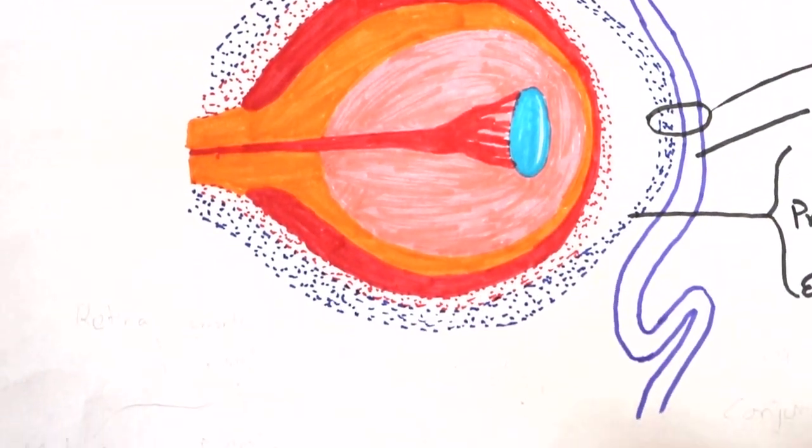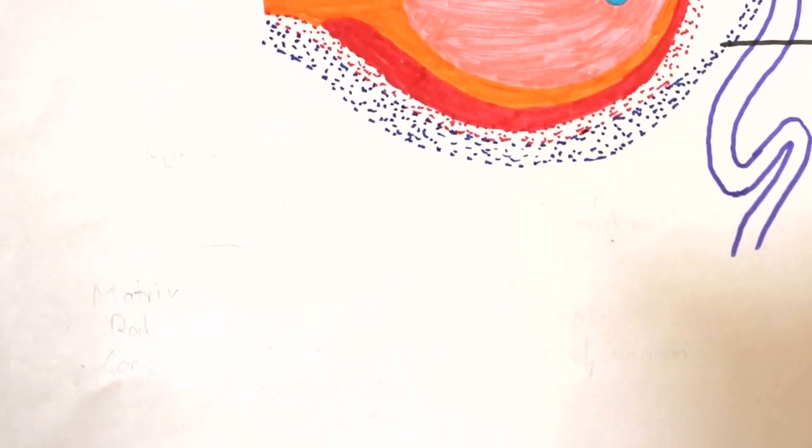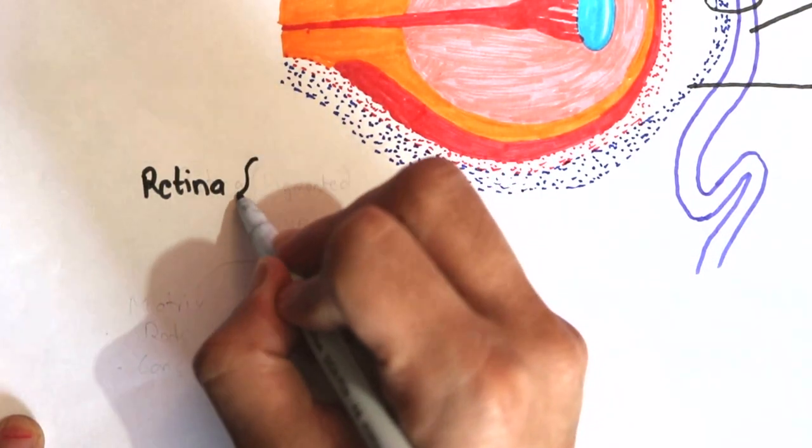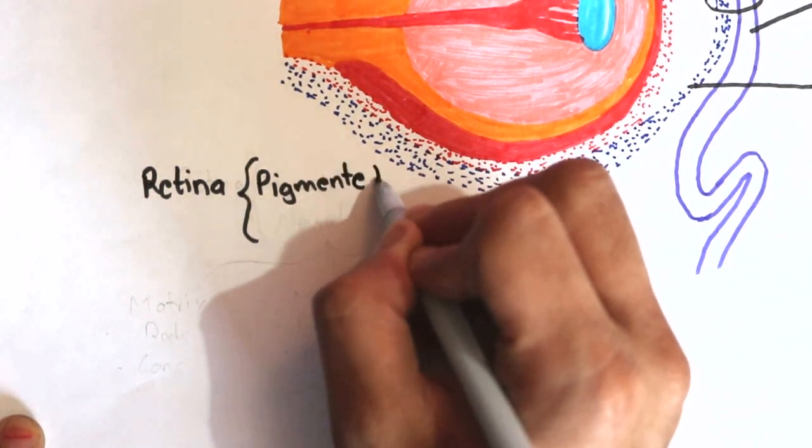Now, on to the development of the retina. We know the retina has two layers: outer pigmented layer and inner neural layer.